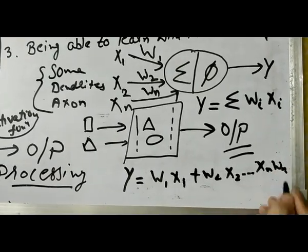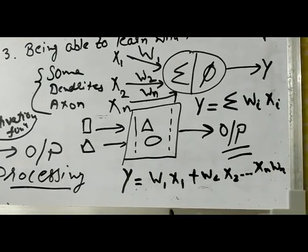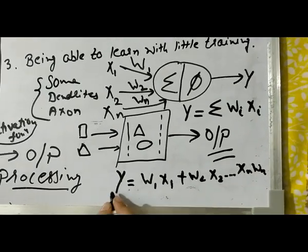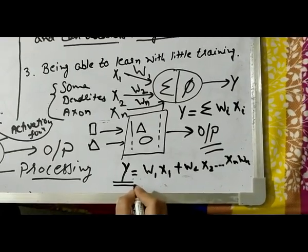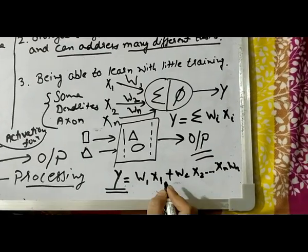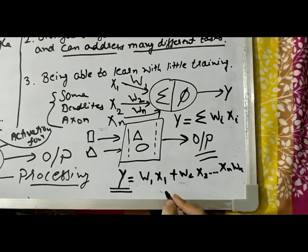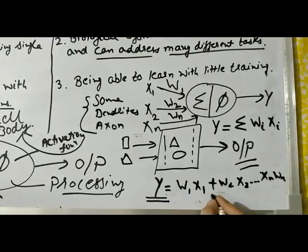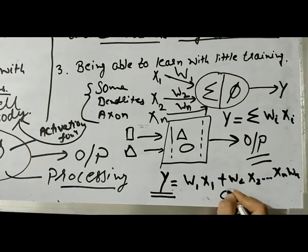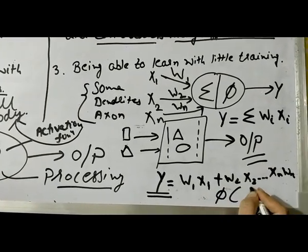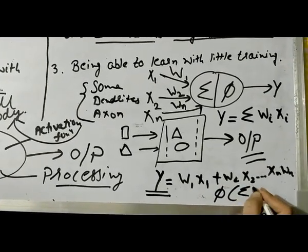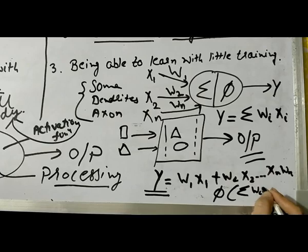After computing the weighted sum, that result is not yet the final output. Before producing the output, you must pass the summed values through a threshold function — the activation function — based on the learning rule you have applied. The output depends on this threshold function evaluation.